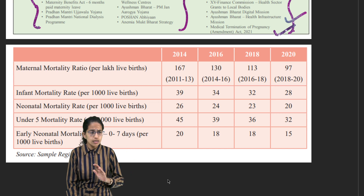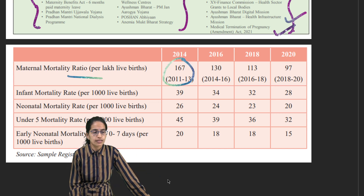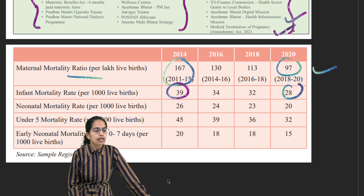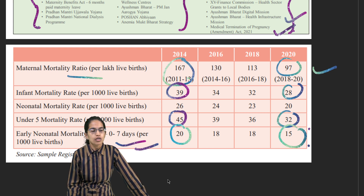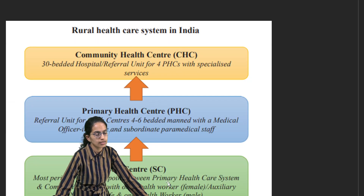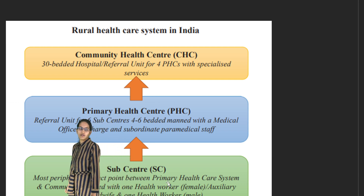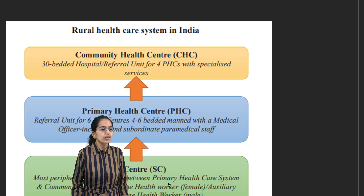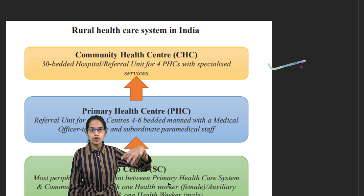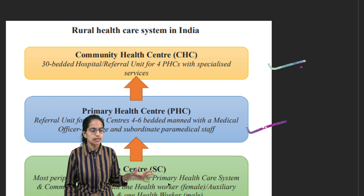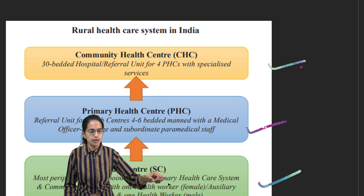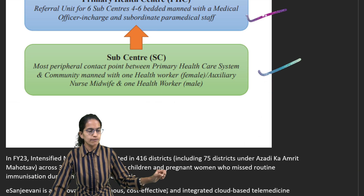In terms of health rates, the maternal mortality rate has declined significantly from 167 to 97 per 1,000, a remarkable figure. Infant mortality rate, under-5 mortality rate, and early neonatal mortality rate — referring to deaths in the first 7 days of birth — have all reduced. Under Ayushman Bharat, at the community level a 30-bedded hospital covers 4 PHCs, and at the PHC level 4–6 bedded centers operate with a medical officer in charge.